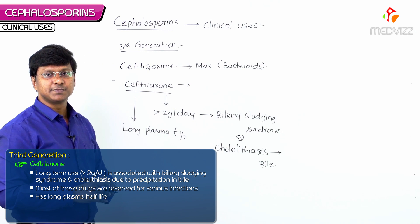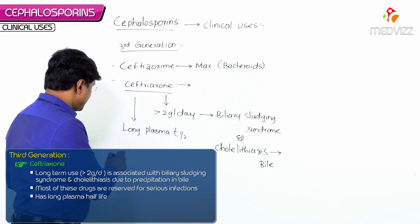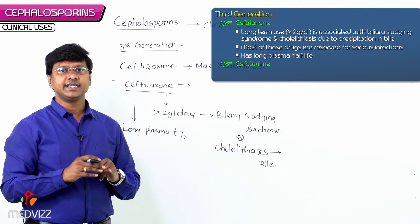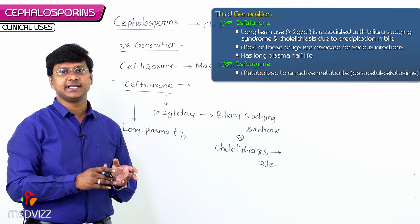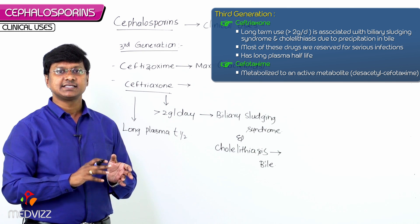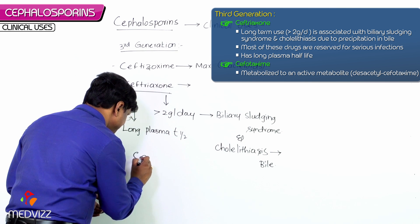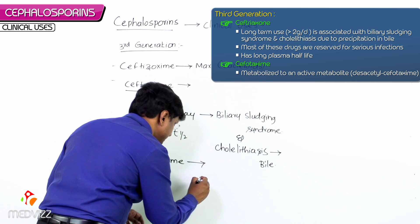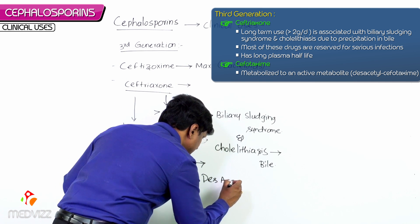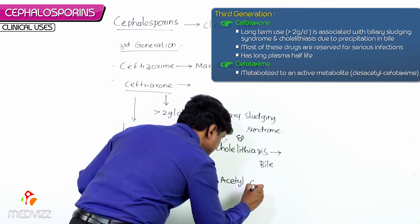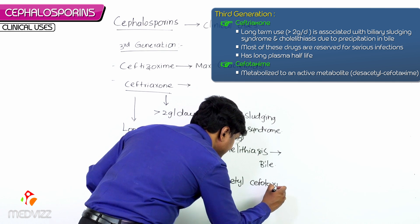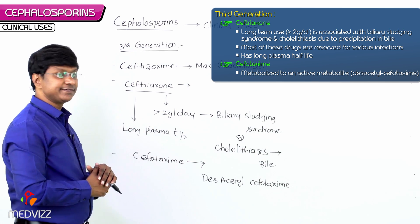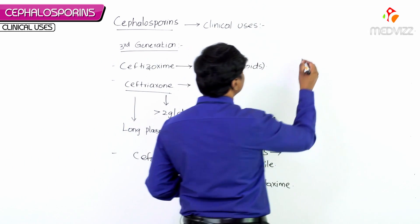Ceftriaxone also has a long plasma half-life. Another third generation cephalosporin, cefotaxime, is metabolized to an active metabolite called desacetyl cefotaxime.